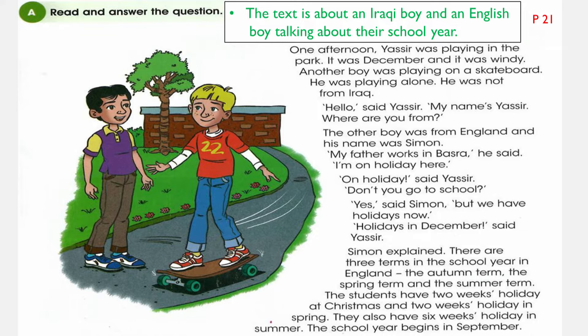One afternoon, Yasr was playing in the park. It was December and it was windy — so Yasr was playing in the park, it was December, and it was windy, meaning the weather was stormy. Another boy was playing on a skateboard — there was another boy playing on a skateboard. He was playing alone.